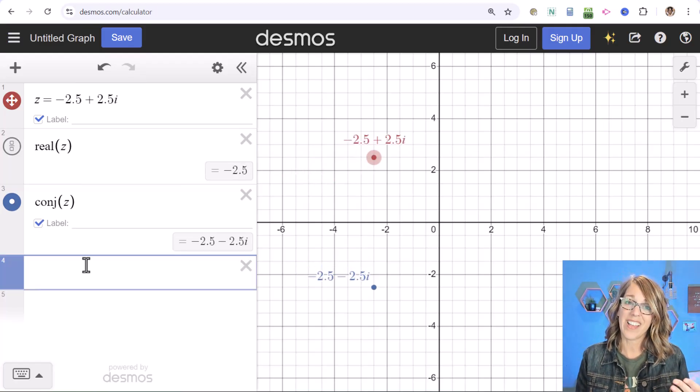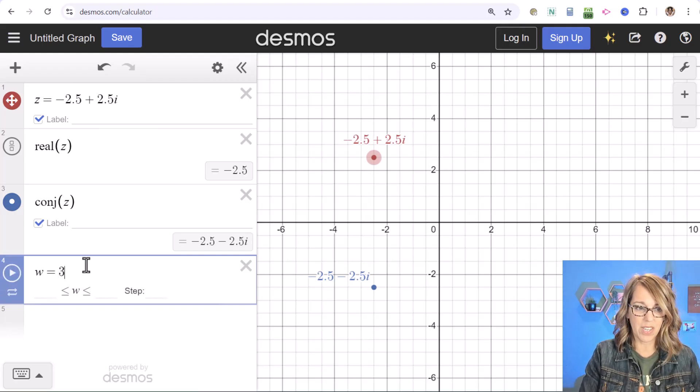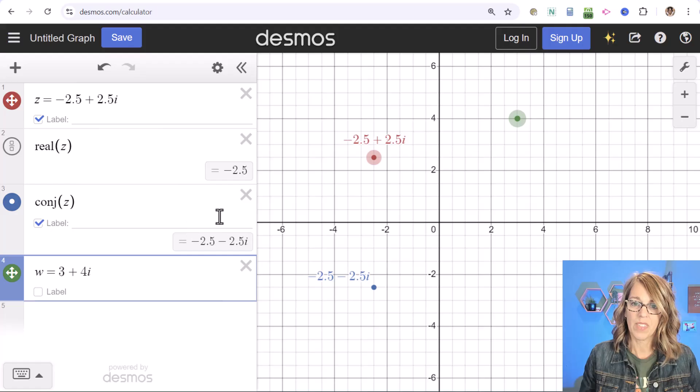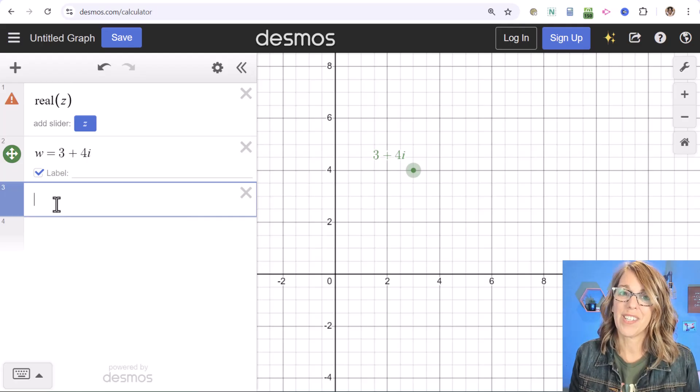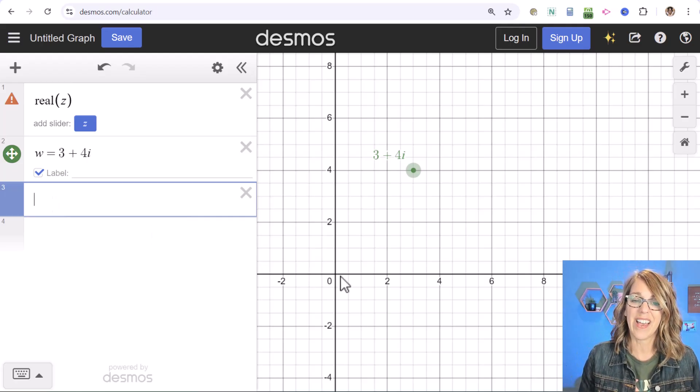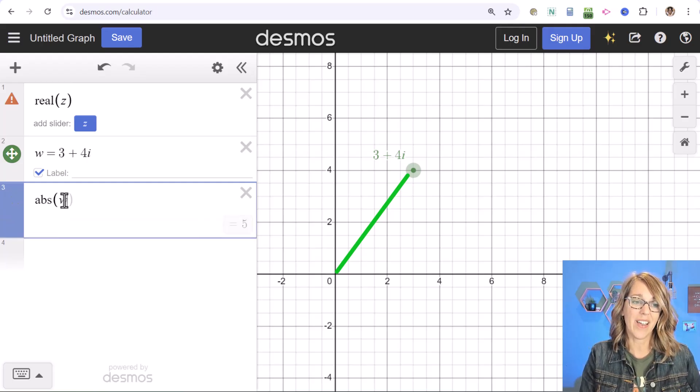In addition we can find the modulus of a value. I'm actually going to find a new one. Let's let w equal 3 plus 4i. Let me get rid of the other two as we're looking at this modulus. To find the modulus of this we're really looking for the length of the segment that connects 0 to 3 plus 4i. We're going to do that by doing the absolute value. So I can do abs of w and it gives me 5.